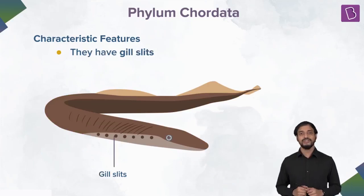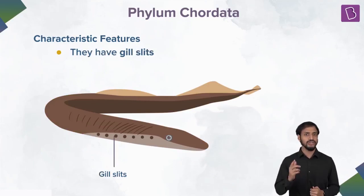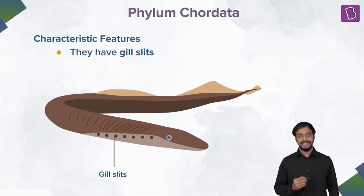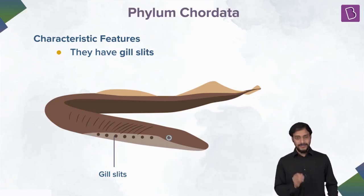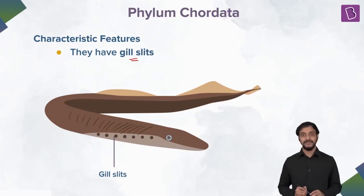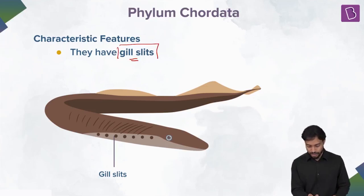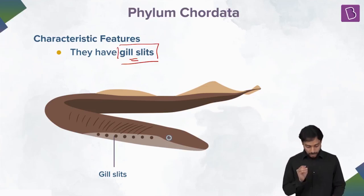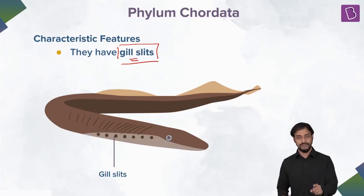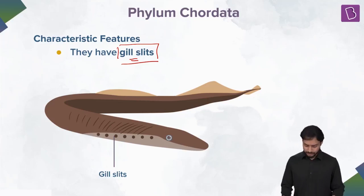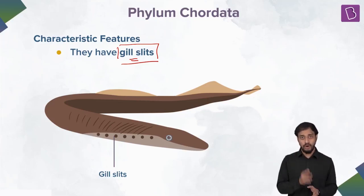How do fishes breathe? Do they have a special structure that we do not have? They have gill slits — note that I'm saying gill slits, not just gills, there's a difference. Some fishes and some amphibians have gill slits, and these are used for gas exchange. Gill slits are also present in some primitive chordates.